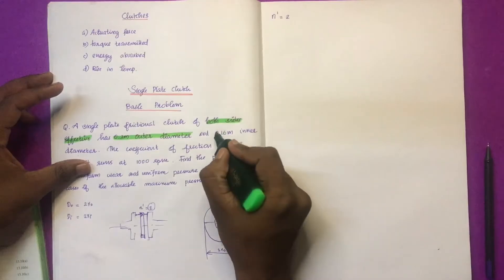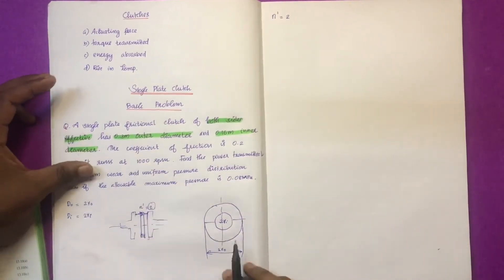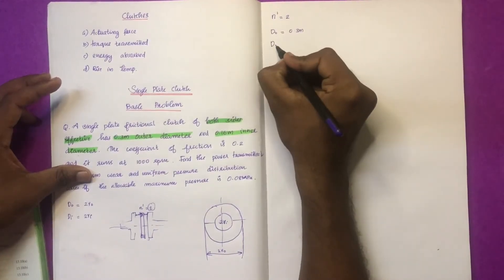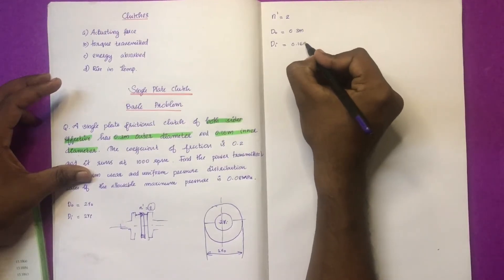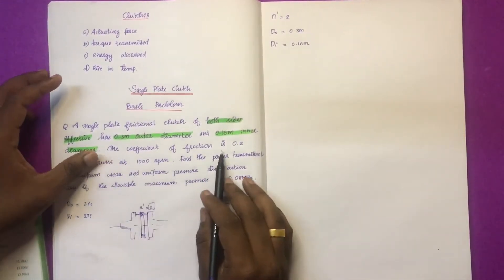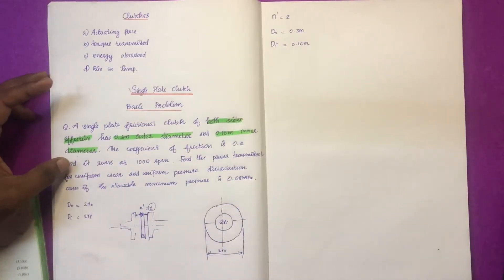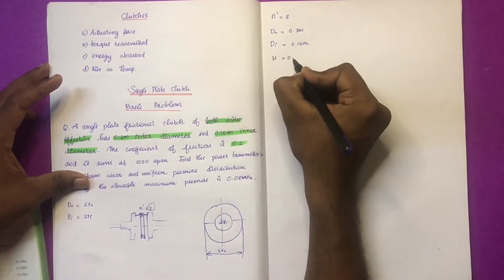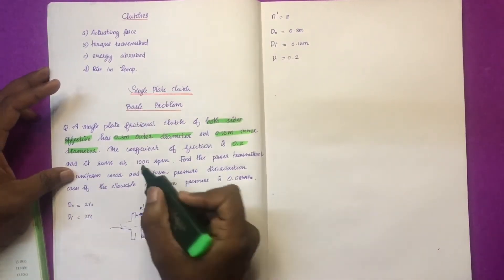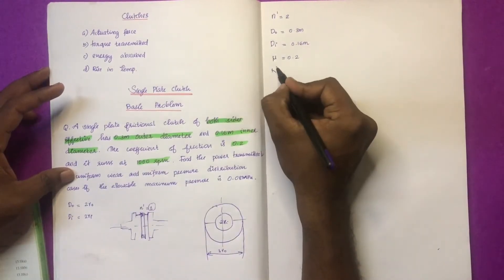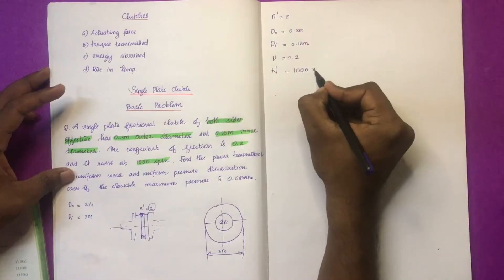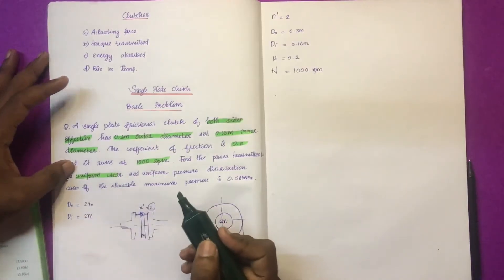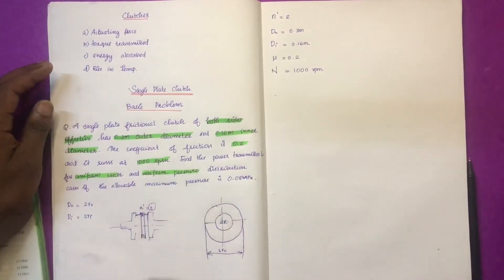This is a single plate frictional clutch with both sides effective, so n' = 2. The outer diameter D_o = 0.3 m, inner diameter D_i = 0.16 m. The coefficient of friction μ = 0.2. The speed N = 1000 RPM. Find the power transmitted using uniform wear theory and uniform pressure theory.